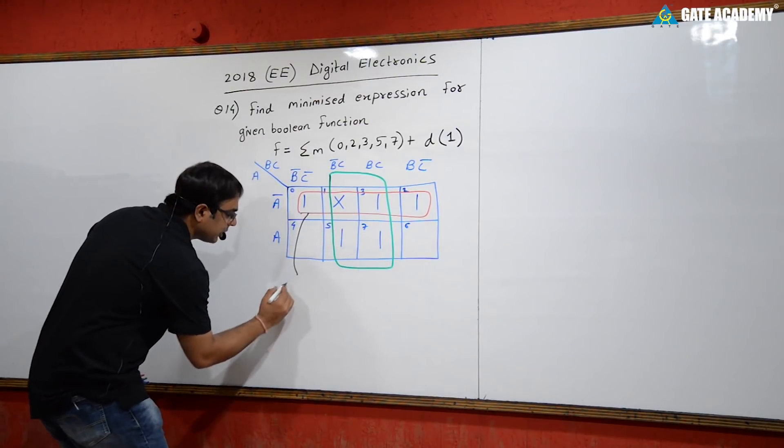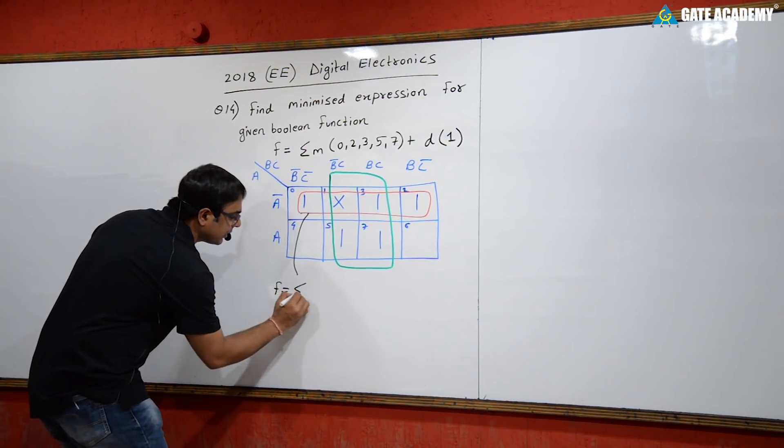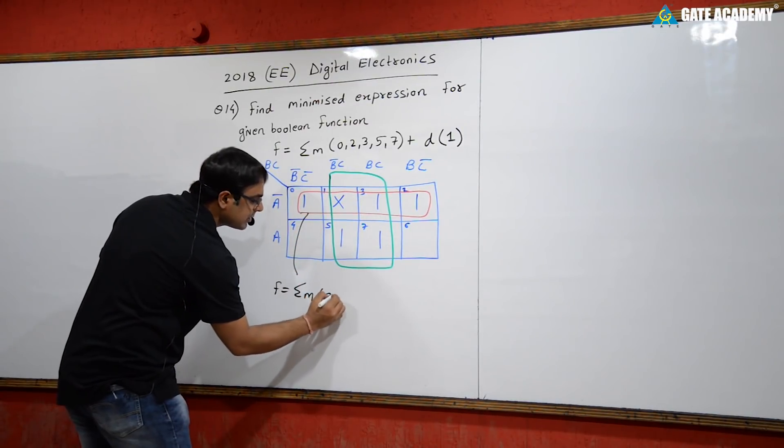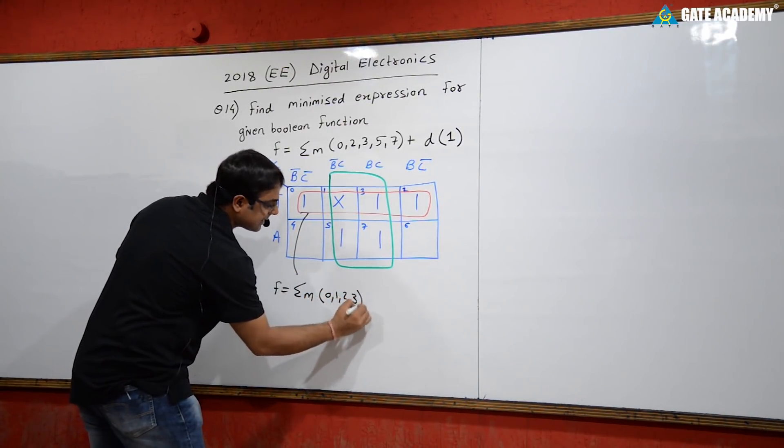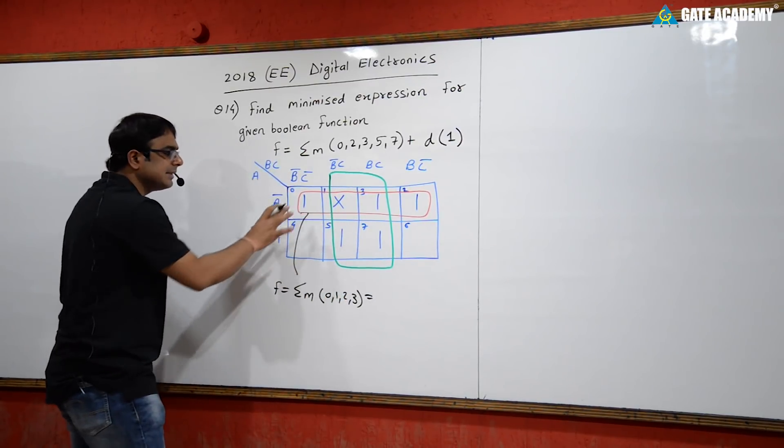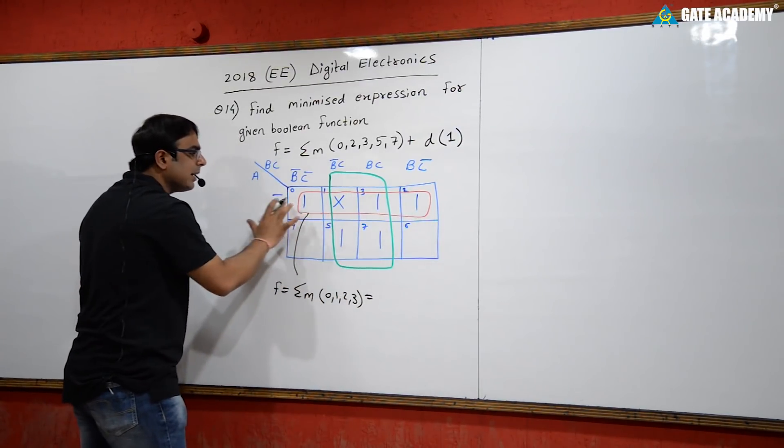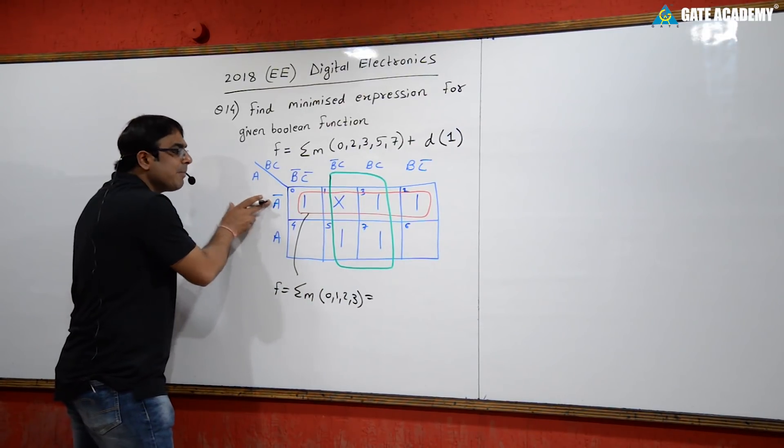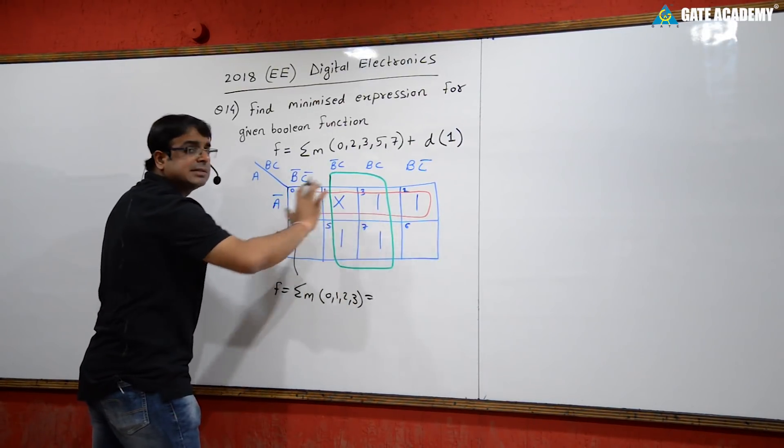If we write this function, the first quad covers minterms 0, 1, 2, 3. You can see throughout, a changes.